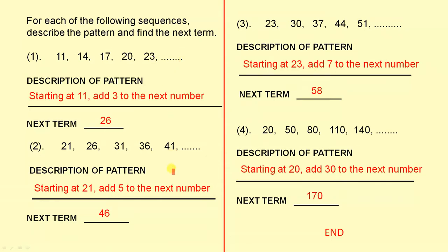Question two. Description of the pattern: starting at twenty-one, add five to the next number. So the next term is forty-six, because forty-one plus five is forty-six.